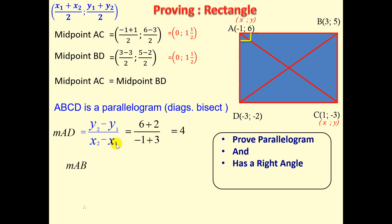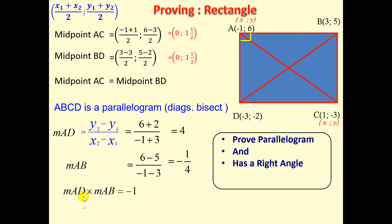We're now going to find the gradient of AB using the same gradient formula. We have (6 - 5) / (-1 - 3), giving us 1 over -4. When we multiply the two gradients: 4 times -1/4 equals -1. Because the product of the gradients is -1, we can conclude that AD is perpendicular to AB — in other words, they meet at 90 degrees. Therefore ABCD is a rectangle: we've proven it is a parallelogram and that angle A is 90°.